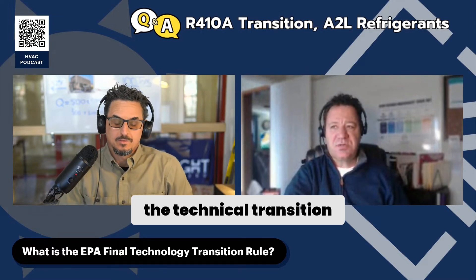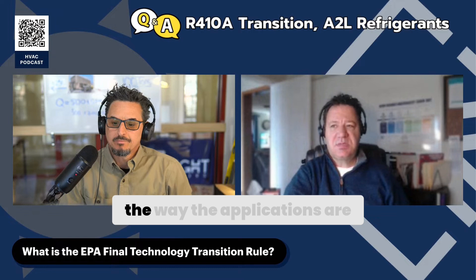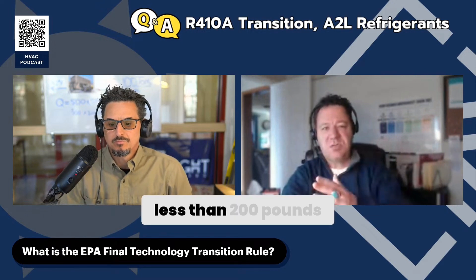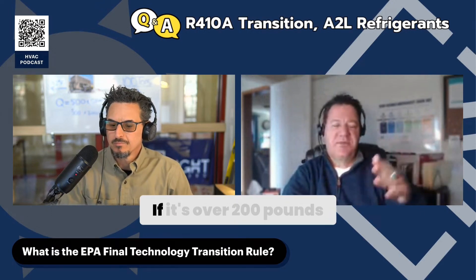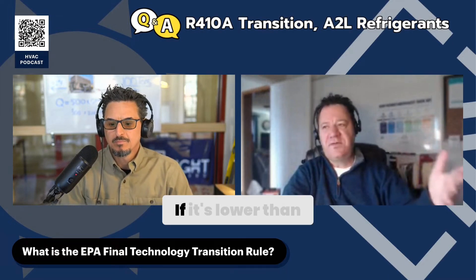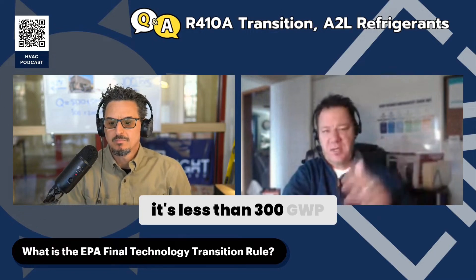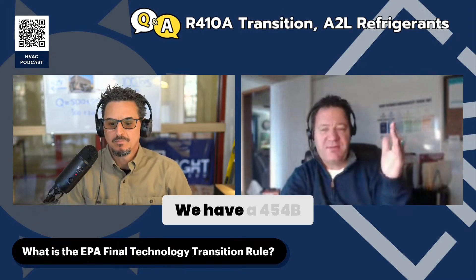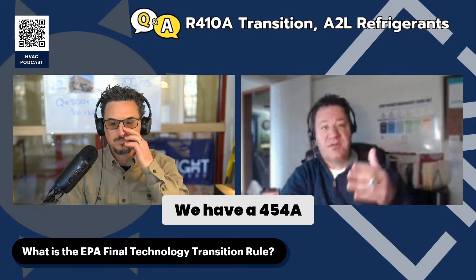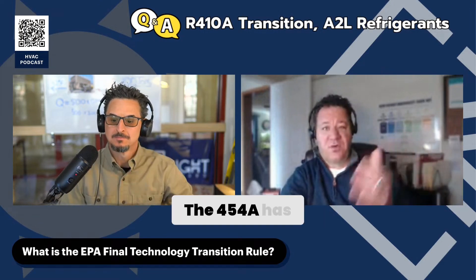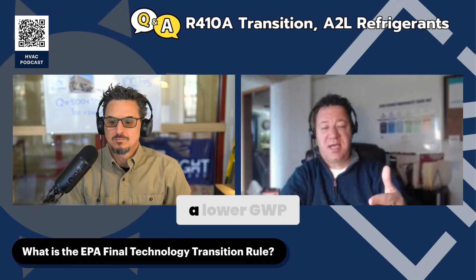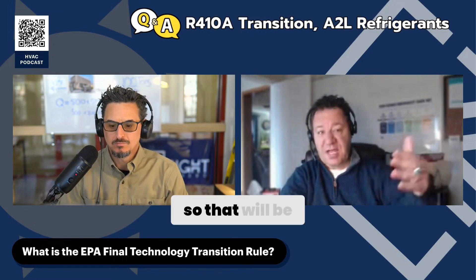The Technology Transition is really about the systems, the applications, how much refrigerant is in the system — whether it's less than 200 pounds or over 200 pounds. That changes things. If it's over 200 pounds of commercial refrigeration, the maximum is 150 GWP. If it's lower than 200 pounds, it's less than 300 GWP. We have 454B for air conditioning at less than 700, and 454A and 454C — 454A has a higher GWP for under 200 pounds, and 454C has a lower GWP for the under-150-pound applications.